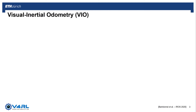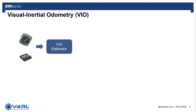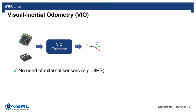To deal with the problematics of pose estimation, vision-inertial odometry, or VIO, is generally employed. A VIO estimator receives as input a stream of images captured by a camera, together with inertial measurements from an IMU. The output is the pose of the sensor suite, allowing us to localize the robot without the need of an external sensor, as in the case of GPS.